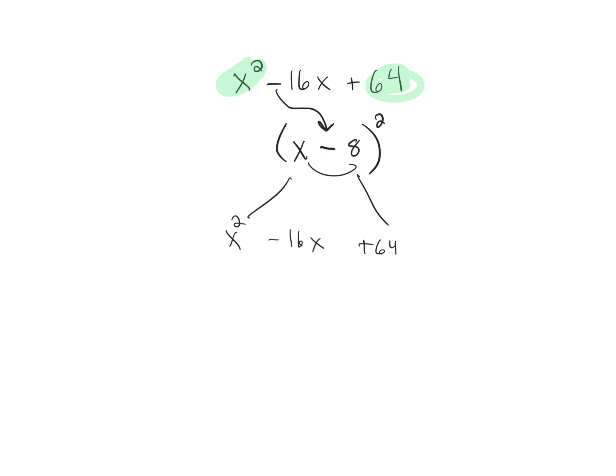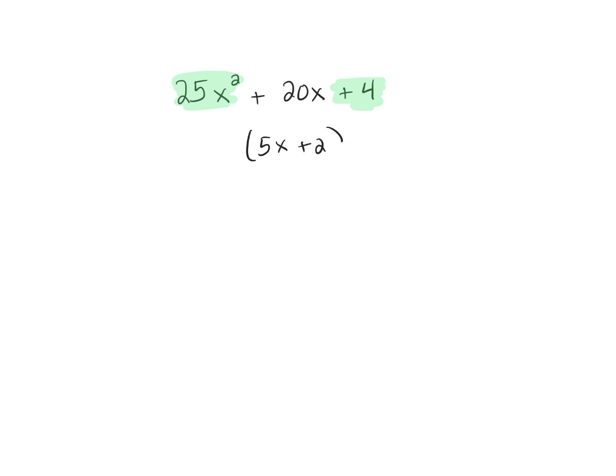Okay, here's another one. Again, if you look at a trinomial and you see a perfect square and a perfect square, then what I want you to do is to see by chance if it is, in fact, 5x + 2. So take that 4 and take that 25x² and put it in there and see if it works.